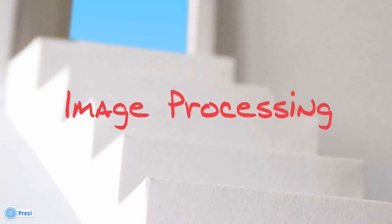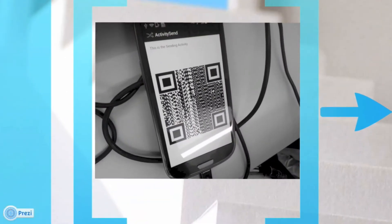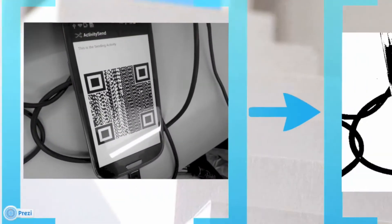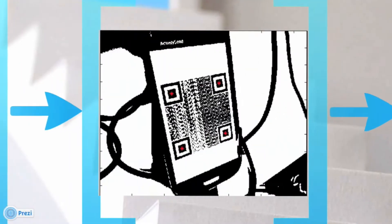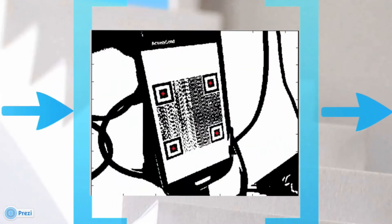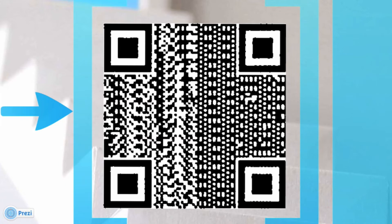Here is the image to process. The first step in the image processing is thresholding. Then the finder pattern centers are located. These centers are used for perspective transformation in order to retrieve the QR bits back.